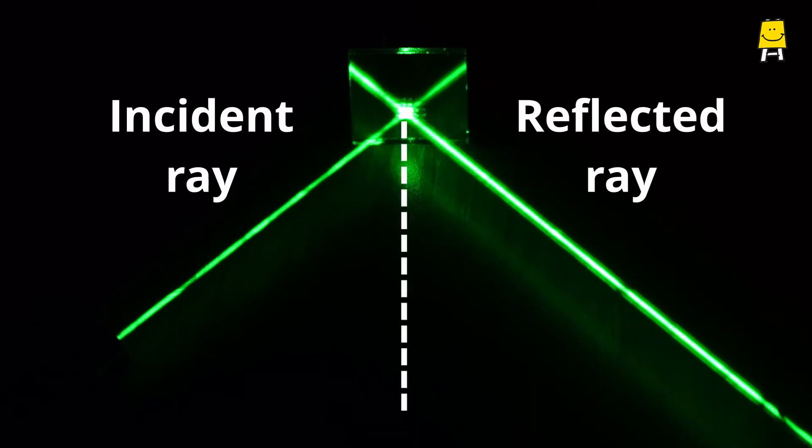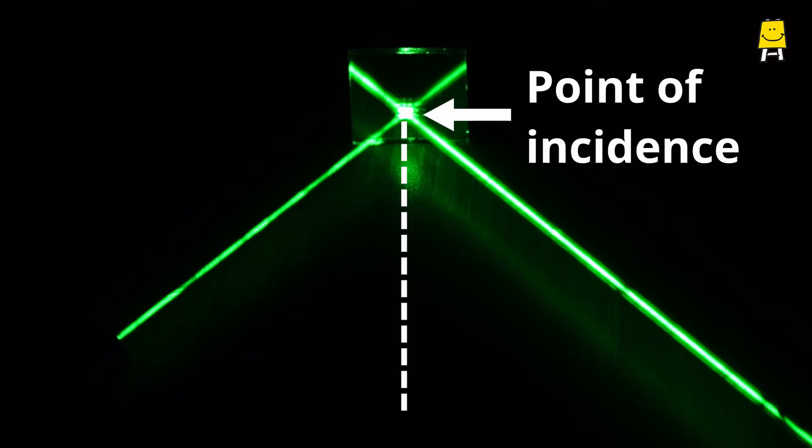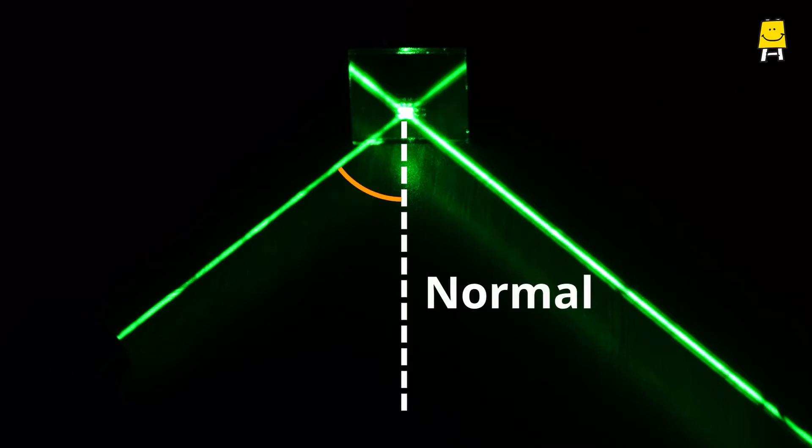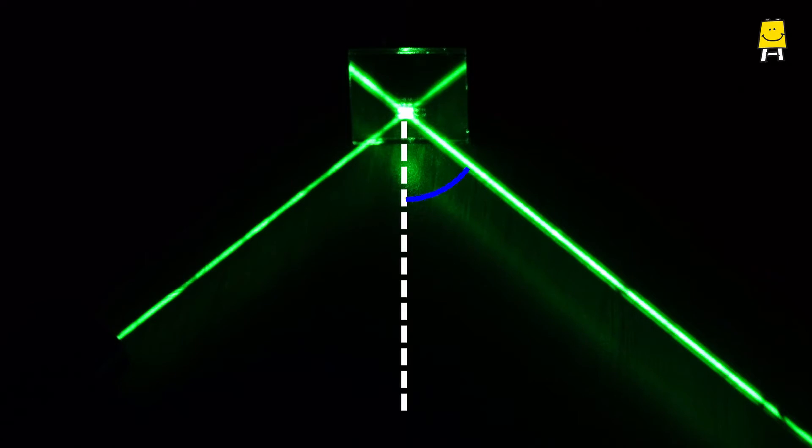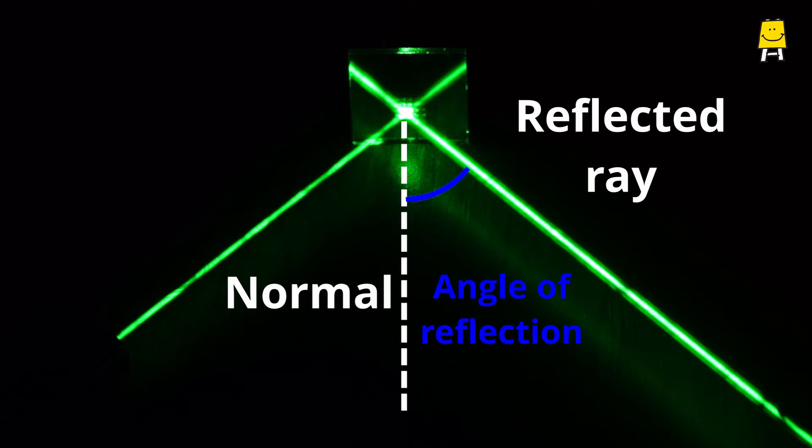The imaginary perpendicular at the point of incidence is called a normal. The angle formed between the incident ray and the normal is called angle of incidence i. The angle between reflected ray and normal is called angle of reflection r.